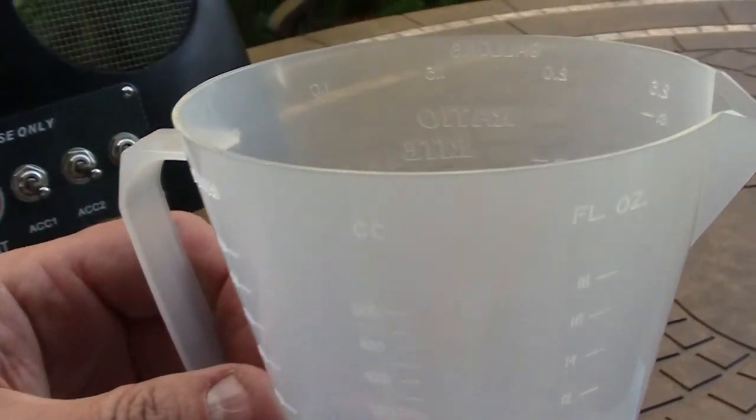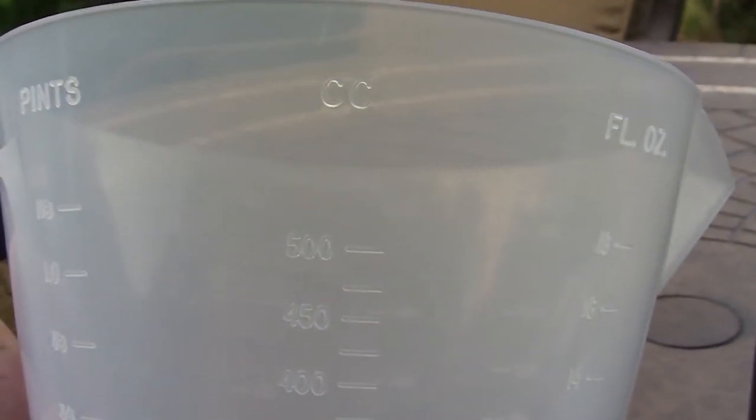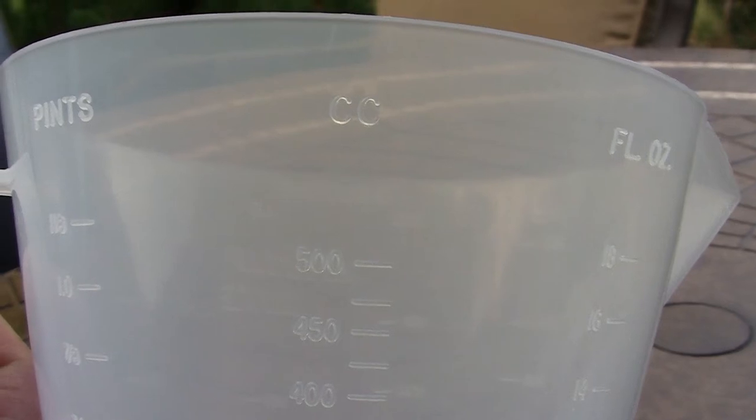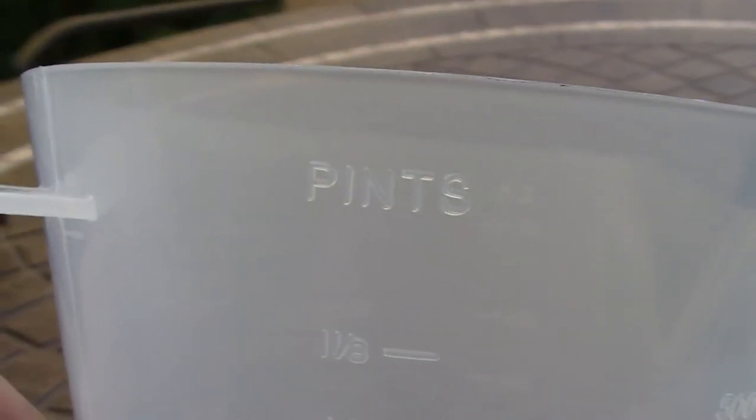On the other side, we have pints, which are derivatives of gallons. We have CCs, which we never use. We hardly ever use pints. And we have fluid ounces, which we do not use as far as a measuring device.